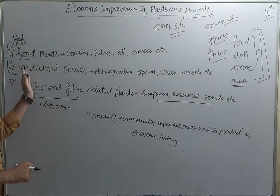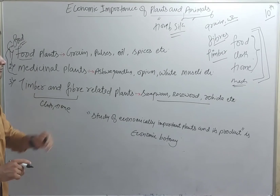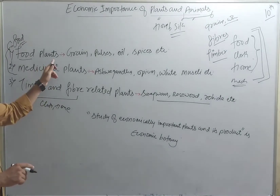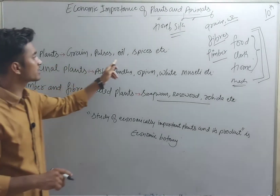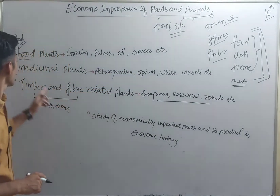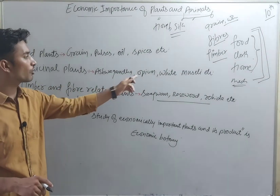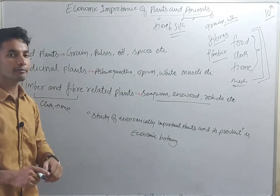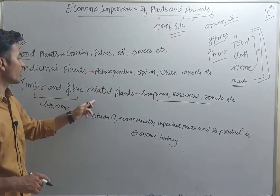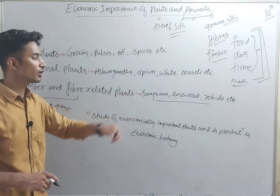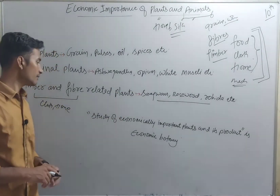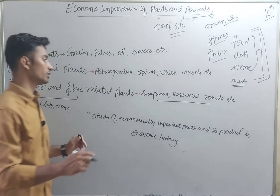We can categorize plants into: food plants, medicinal plants, and timber and fiber related plants. In food plants, we have grains, pulses, oil, and spices. In medicinal plants, we have ashwagandha, opium, and white muesli. In timber and fiber related plants, we have rosewood, saagwan, and rohida.